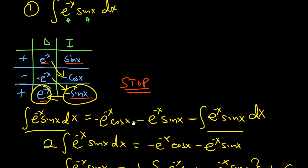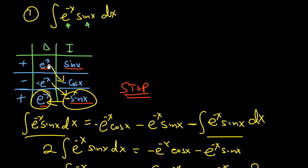Don't forget: if you're using the DI method and you see the original integral reappearing in any one row, stop at that row and multiply those two functions together. That gives you the original integral on the right-hand side — just bring it back over, combine it using ordinary algebra, and you're able to find that integral with ease.